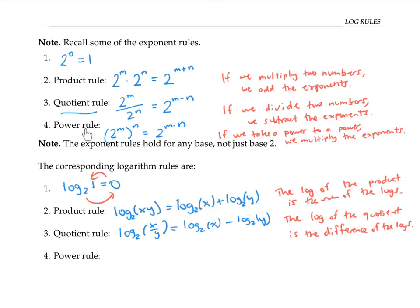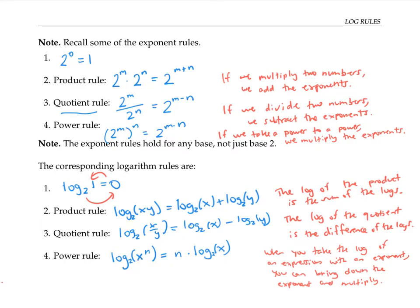Finally, the power rule for exponents can be rewritten in terms of logs by saying the log of x to the n is equal to n times log of x. Sometimes people describe this rule by saying when you take the log of an expression with an exponent, you can bring down the exponent and multiply. If we think of x as being some power of two, this is really saying when we take a power to a power, we multiply their exponents — exactly how we described the power rule above.